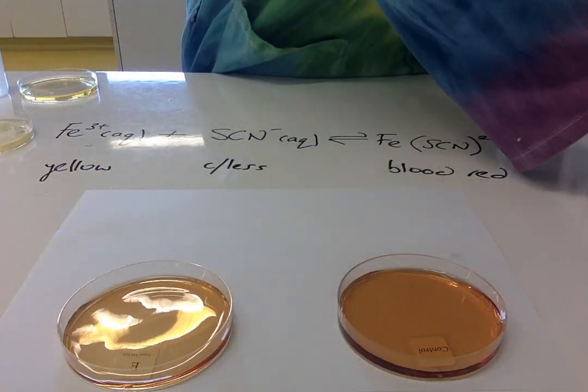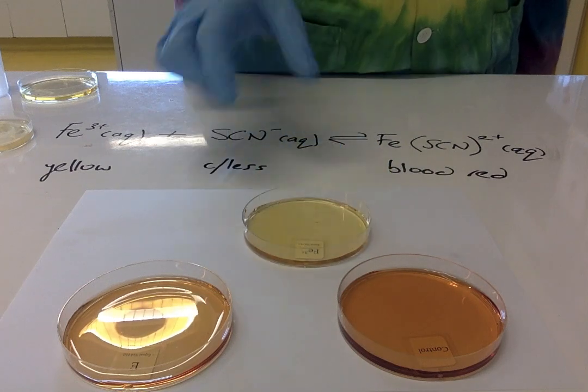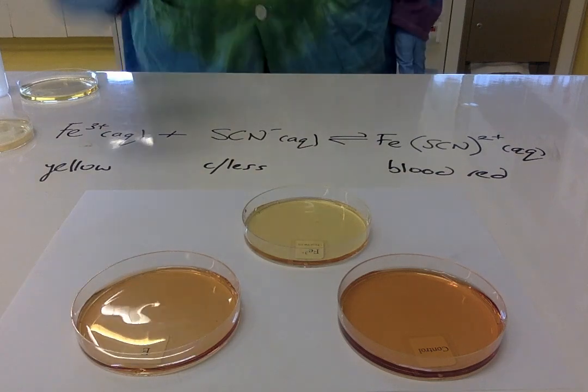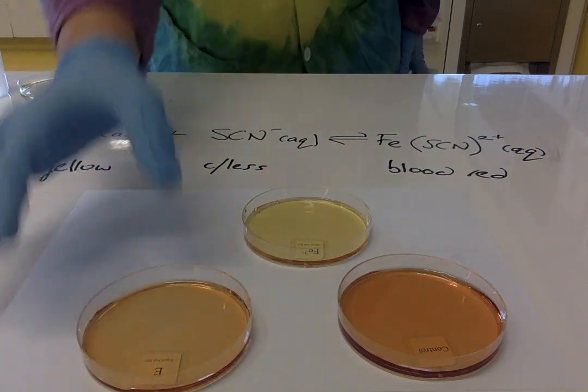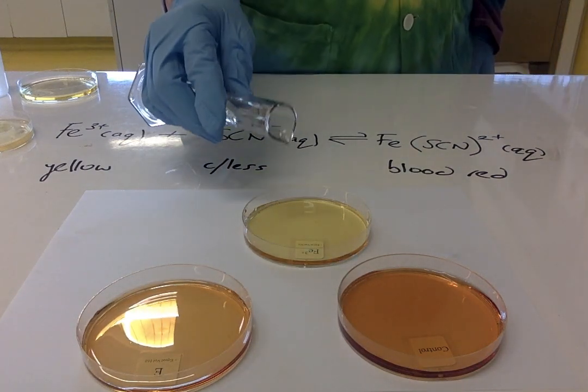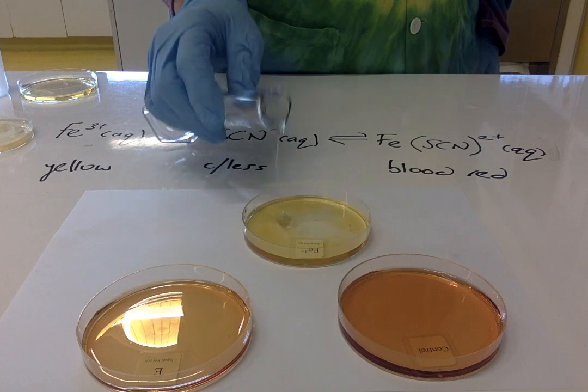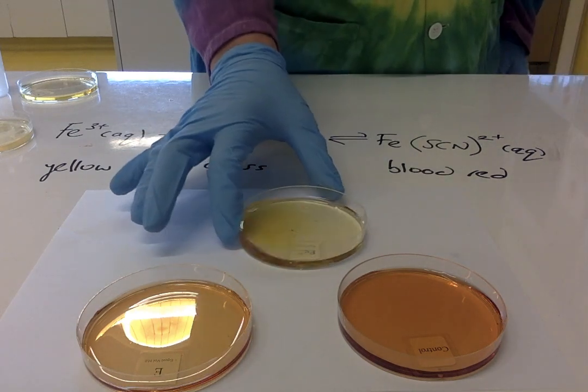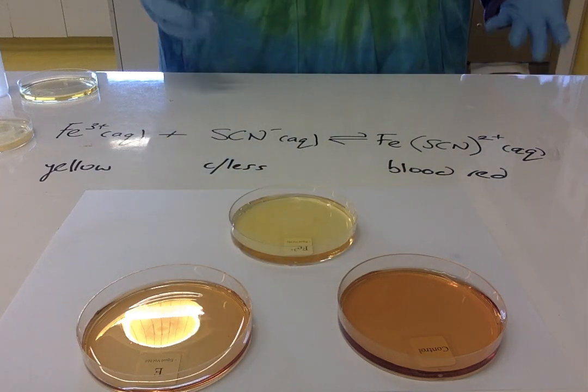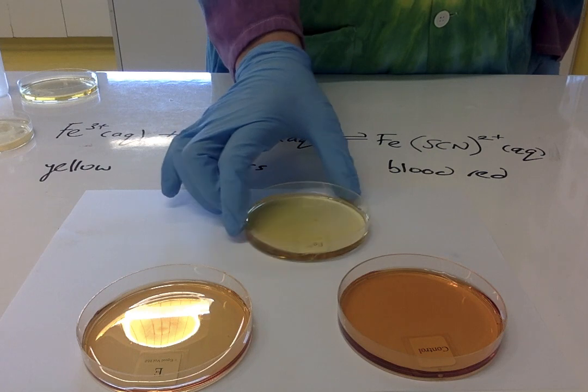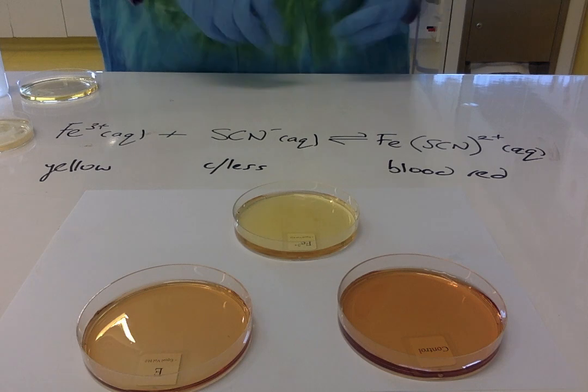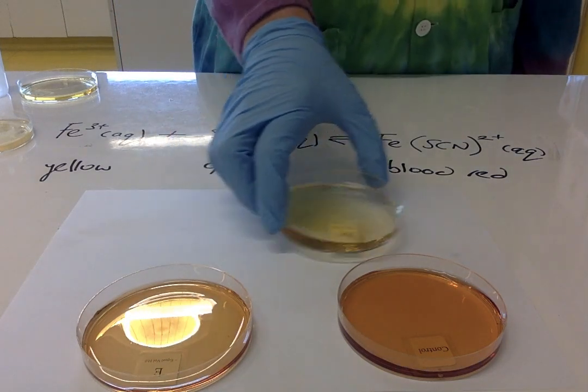Part of this test is we've got just Fe3+ by itself, which is yellow. What I'm going to do is add some water to the yellow. Effectively, it's just slightly lighter yellow. All we've done is—this is not in equilibrium, it's just iron(III) nitrate on its own—I've just diluted it, so the color itself becomes lighter.